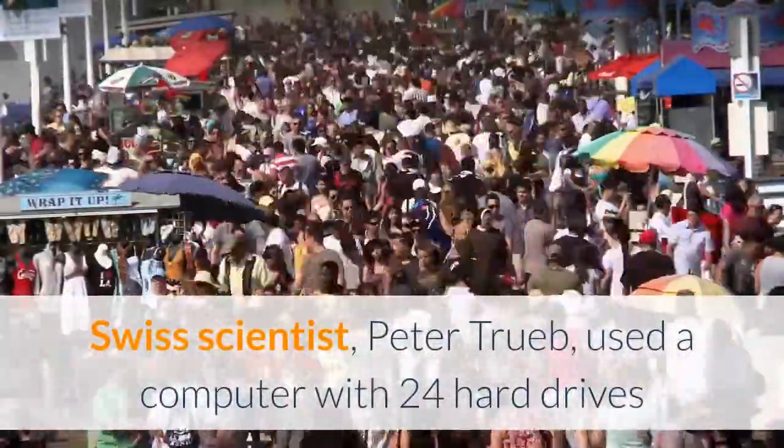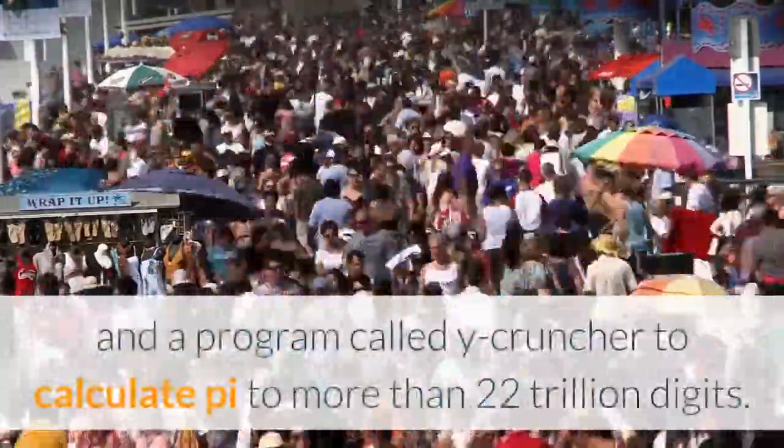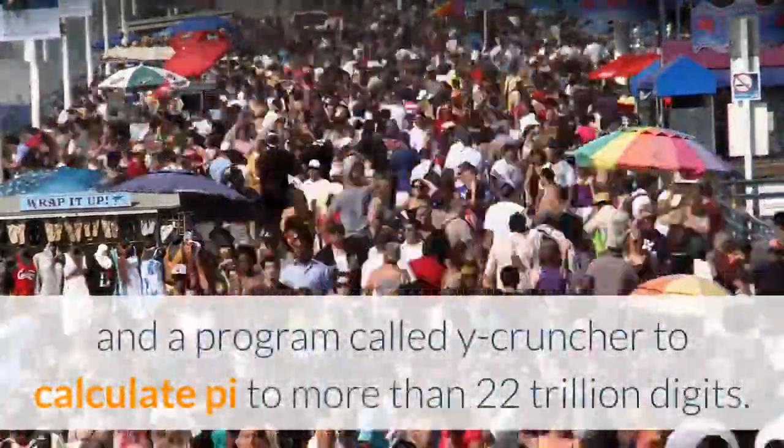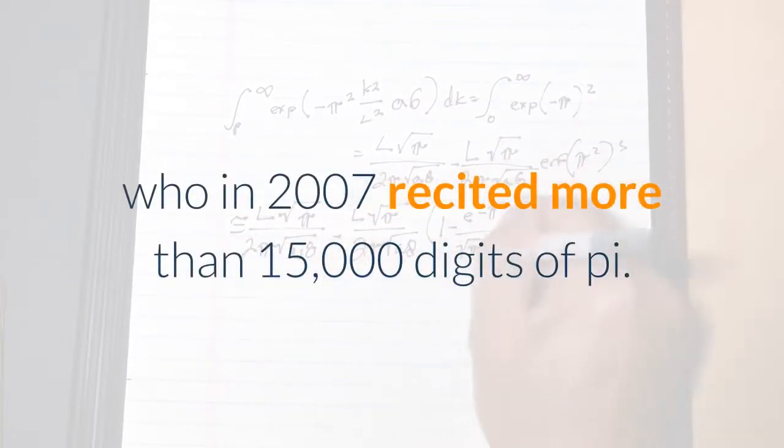Swiss scientist Peter Troub used a computer with 24 hard drives and a program called Y-Cruncher to calculate Pi to more than 22 trillion digits. The U.S. record is held by Mark O'Meill of suburban Philadelphia, who in 2007 recited more than 15,000 digits of Pi.